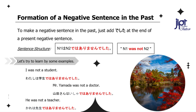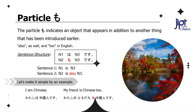He was not a teacher: Kare wa sensei de wa arimasen deshita. Before moving ahead, let me congratulate you on coming this far with me and almost completing your first lesson. Congratulations! You are on your way to becoming a good Japanese speaker. Now let's move on to our next particle.